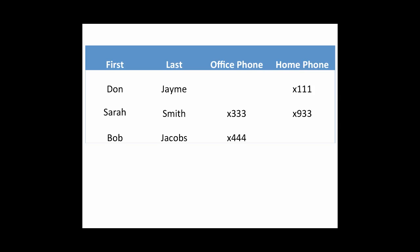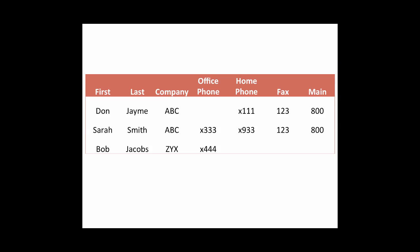However, once you get big, it starts to become problematic. In our example, we start adding more columns — one of which is company. Both Dan and Sarah go to the same company, ABC. We also have some information that's not really linked to the person, but to the company. The office phone is linked to the person, and Don and Sarah have different office phones, same with home phones. However, the fax and main number are really linked to the company, not the person.